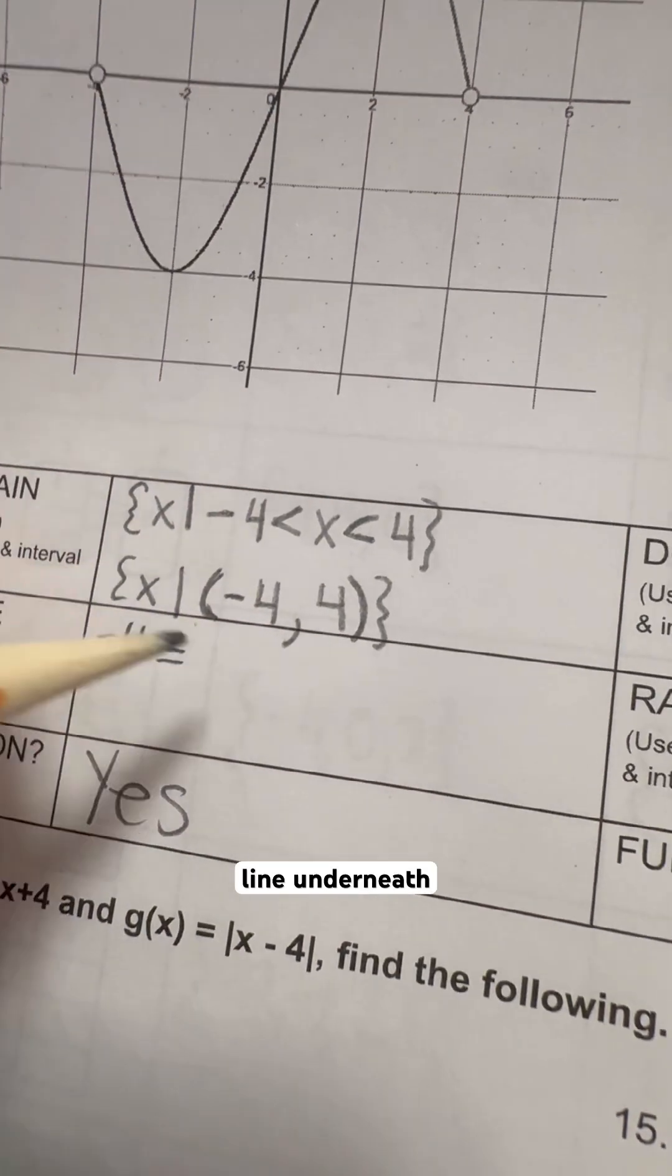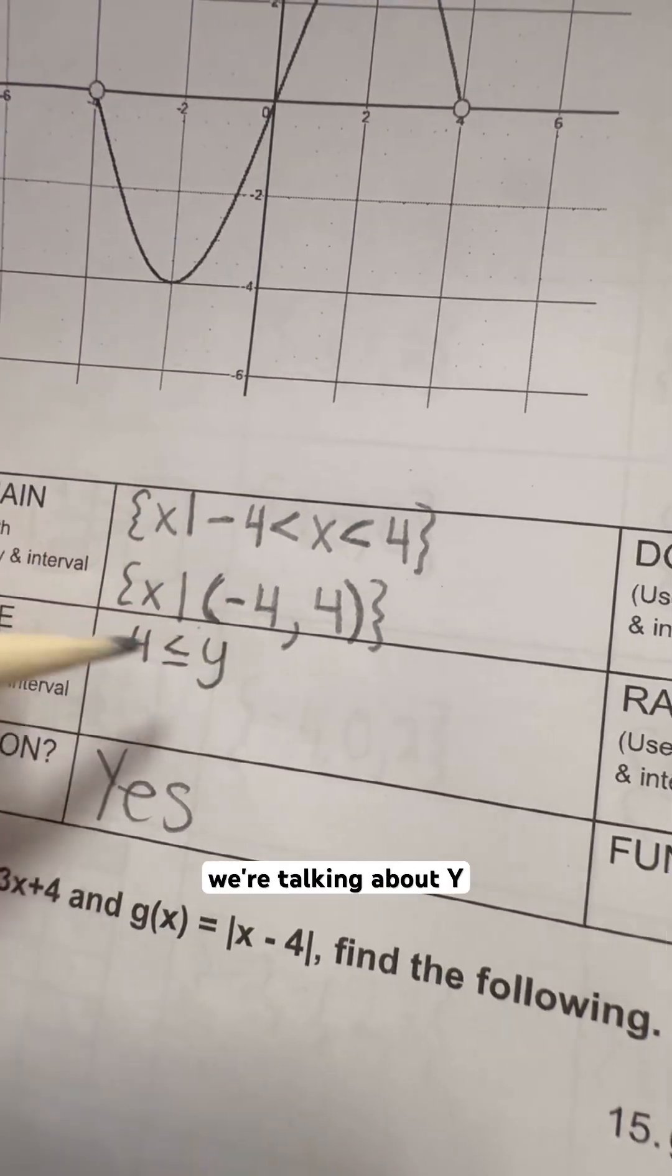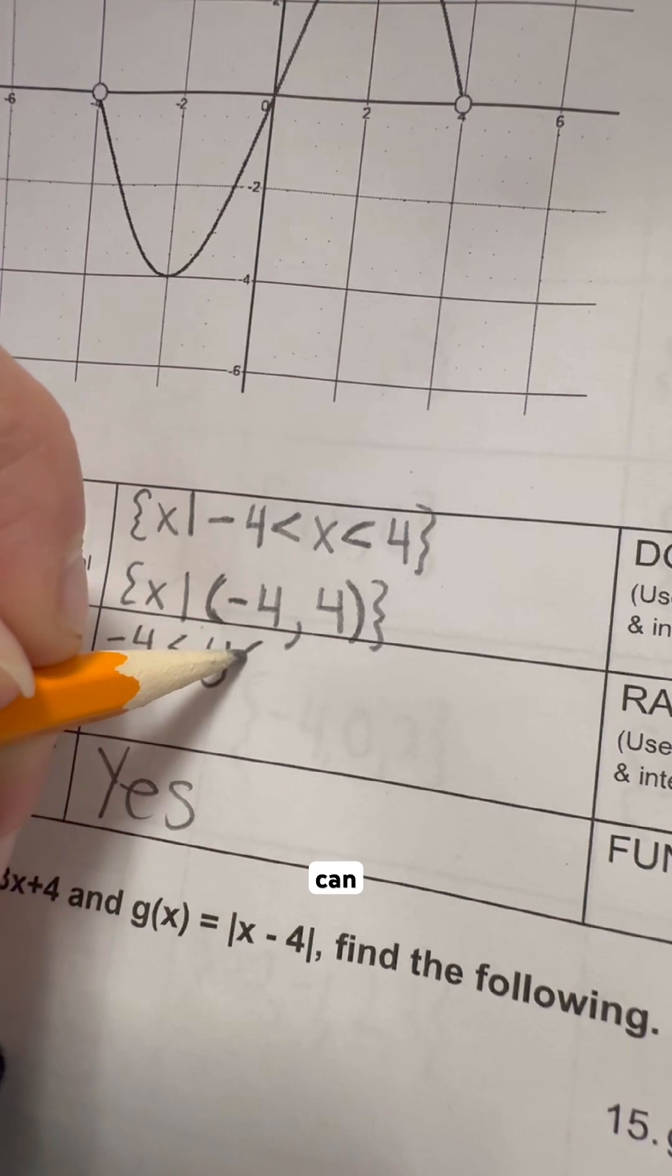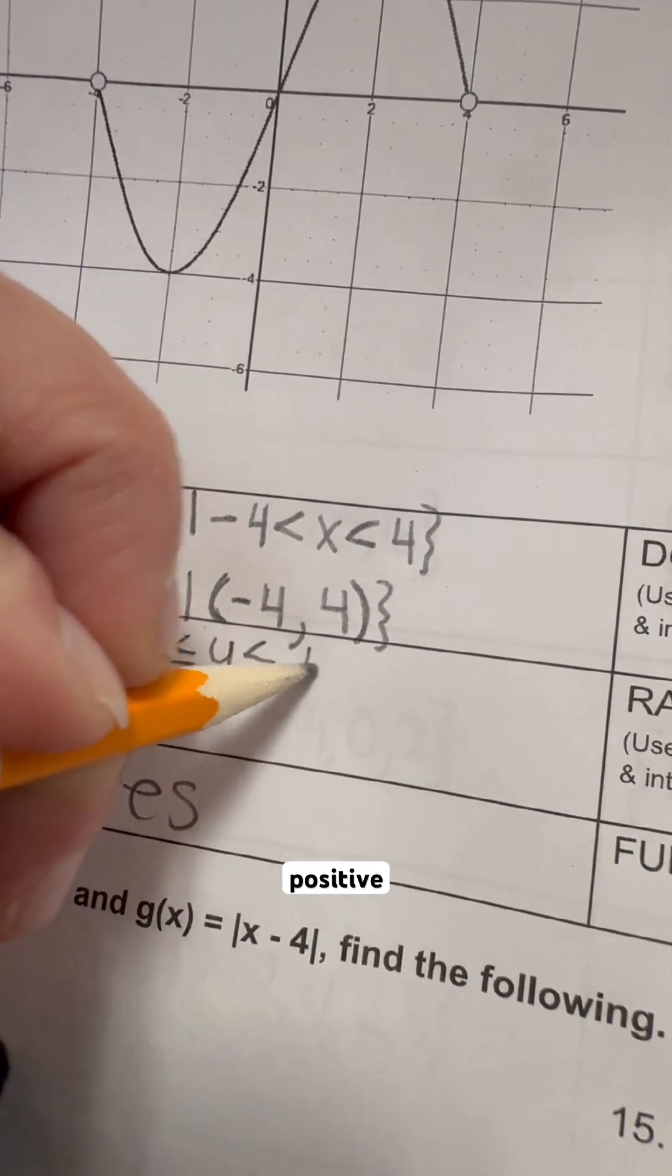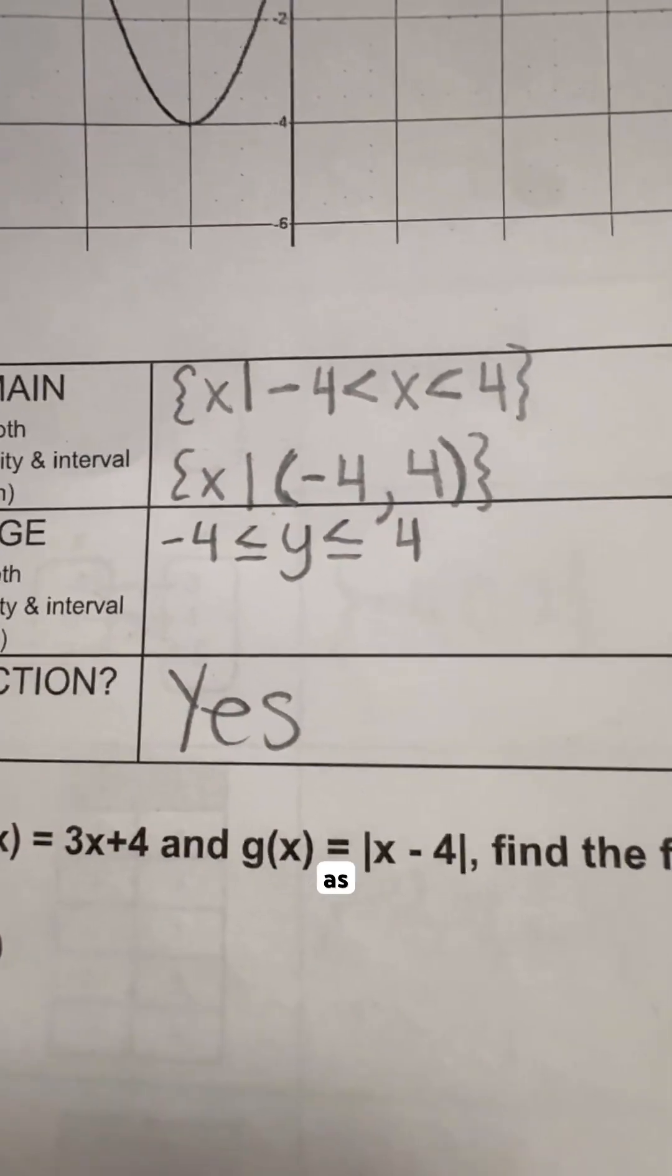So this is going to have a line underneath it because we're talking about our range. We're talking about y, and it can also equal positive four. So you would write the line underneath that as well.